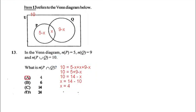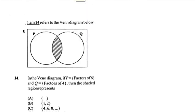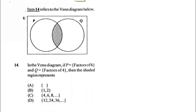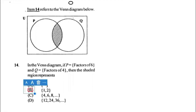Number fourteen: in the Venn diagram, if P equals the factors of 6 and Q equals the factors of 4, the shaded region represents the intersection. Write out the factors for 6 and the factors for 4, and find any numbers common to both sets. The answer is B. You can check the 2013 paper link in the description for detailed working.